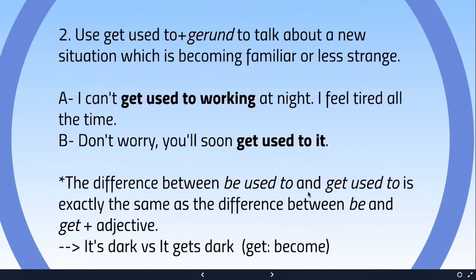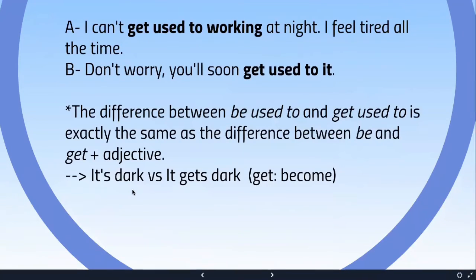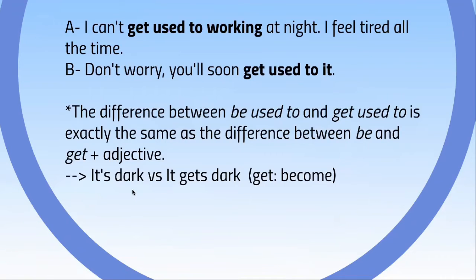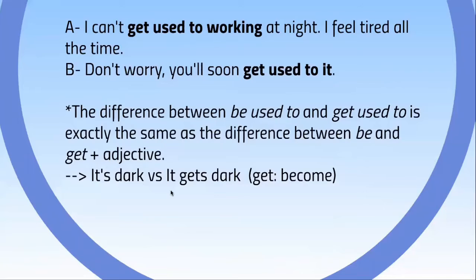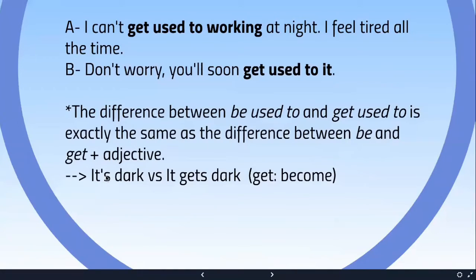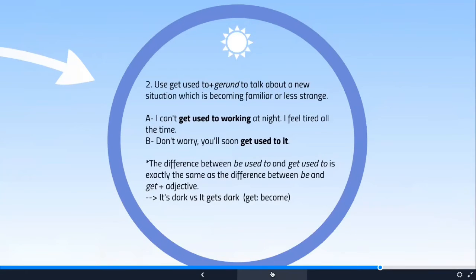The difference between 'be used to' and 'get used to' is exactly the same as the difference between verb 'to be' and verb 'get' with an adjective. For example: 'It is dark' versus 'it gets dark.' Around 5:45, almost 6 PM, it gets dark — the time is changing, it's in transition to become dark. That's why we use 'be used to' versus 'get used to.' Both finish in gerund. 'Be used to doing' means this process is already there — it's part of you. 'Get used to doing' means it's not yet, but it's getting there — it's in the process.